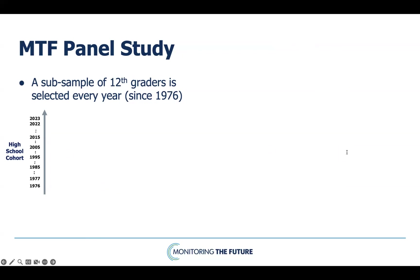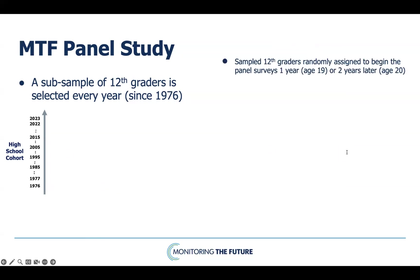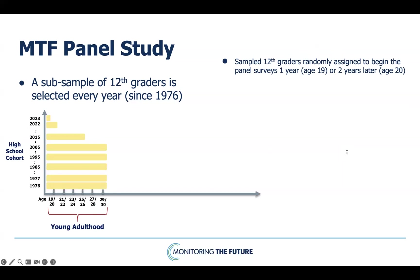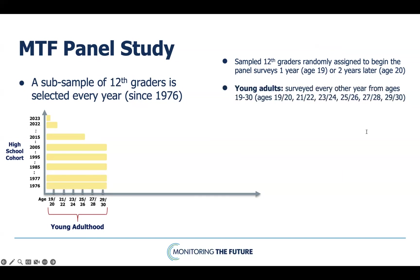The second subsample starts their post-high school surveys at age 20, two years after leaving high school. For young adult surveys, the subsamples are then surveyed every other year: those who started at age 19 are again surveyed at ages 21, 23, 25, 27, and 29; those who started at age 20 are surveyed again at ages 22, 24, 26, 28, and 30. For middle and older adult surveys, panel participants are surveyed every five years beginning at age 35. The first age 65 survey was conducted in 2023 for the oldest cohort, who were high school seniors in 1976.